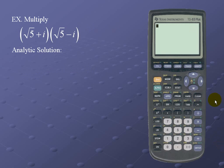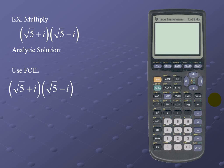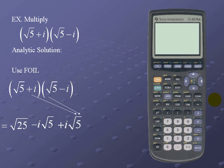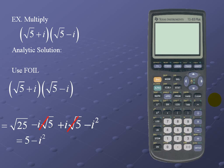Next we'll multiply: (√5 + i) times (√5 - i), which is actually a sum and difference of squares. We'll use the FOIL method — multiplying the first terms, the outermost terms, the innermost terms, and the last terms. Notice that the outermost and innermost terms cancel. We're left with 5 - i², but since i² equals negative 1, we make the substitution for a result of 6.